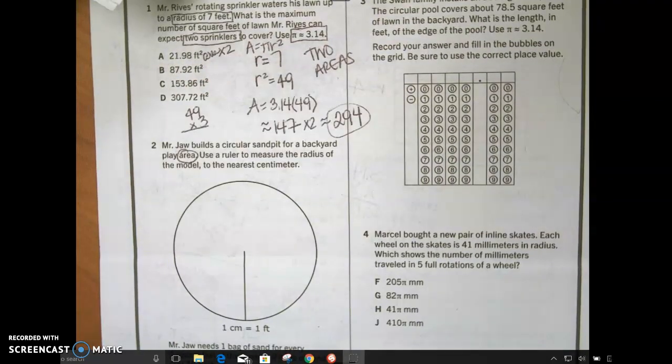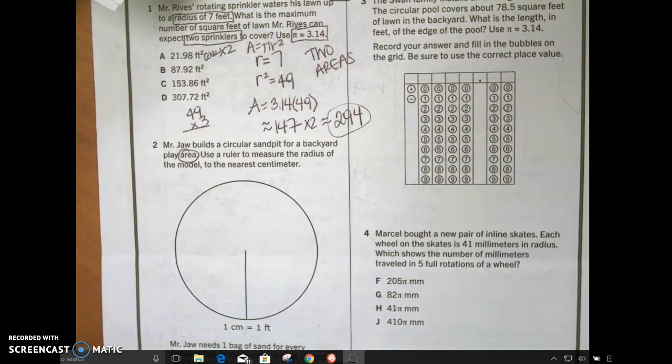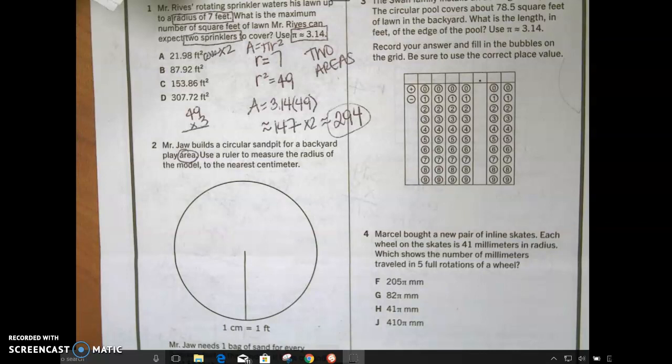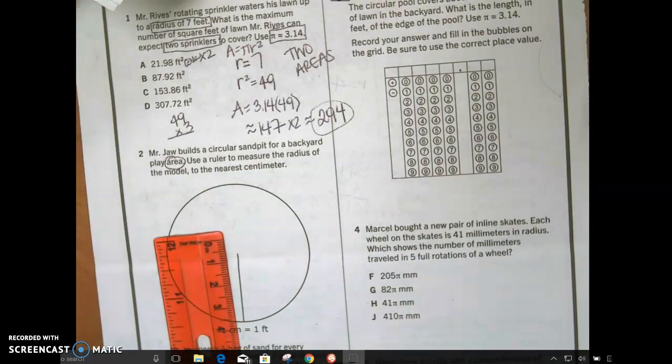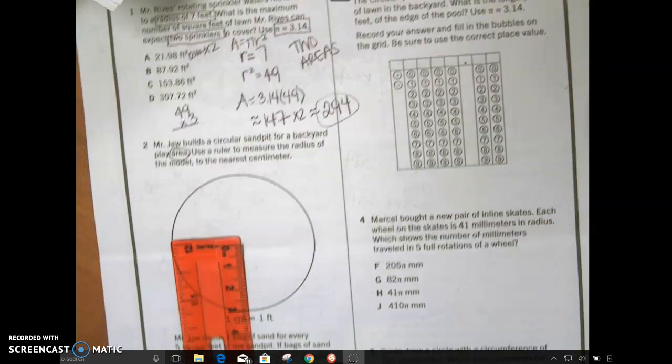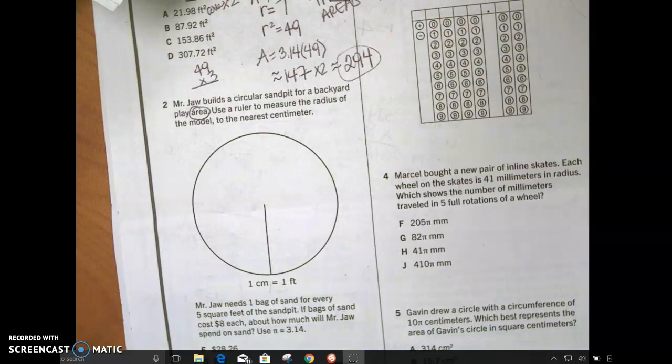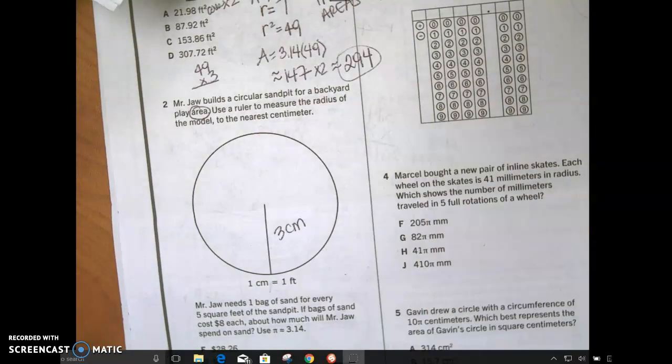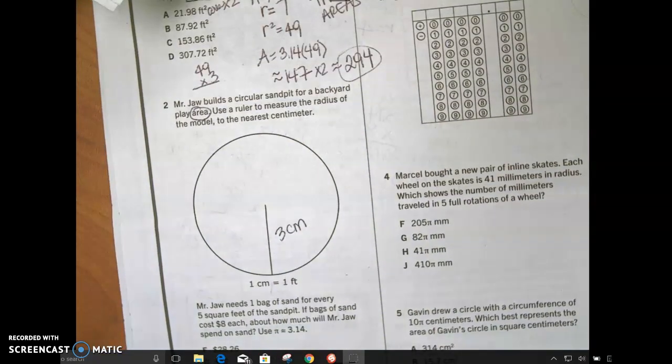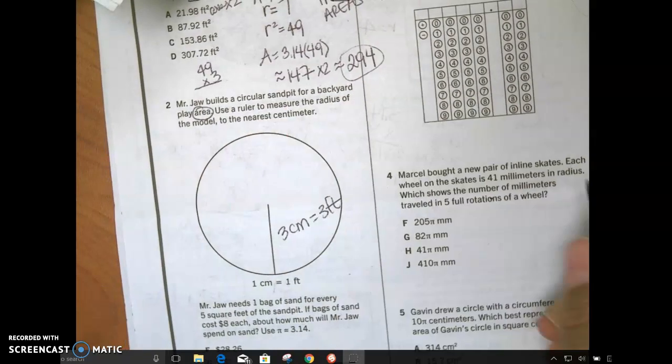Use a ruler to measure the radius of the model to the nearest centimeter. Where's my ruler? I had a ruler up here earlier today. It's going to be, where's my ruler? It's pink. Yes, that ruler. Can I have that, please? Another student was using it earlier today. Thank you. How long is this radius? Three centimeters.